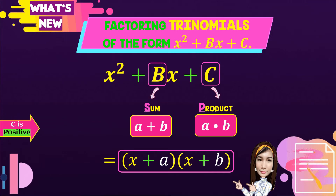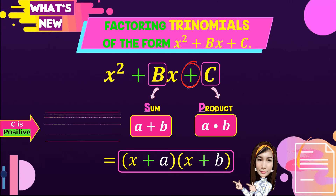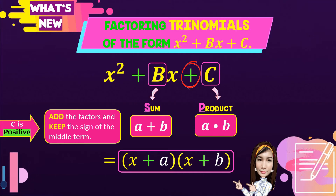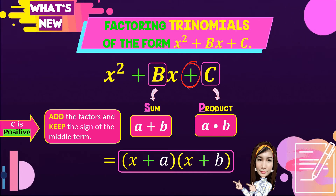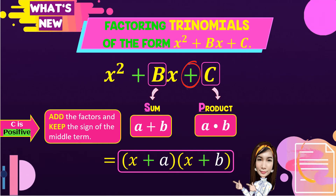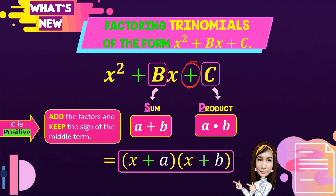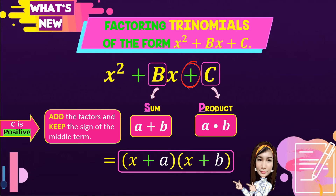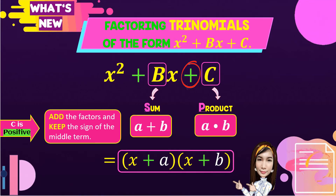So here, when c is positive, we add the factors and keep the sign of the middle term. As you observe, the middle term is positive, so the binomial factors are both positive and the operations are both plus.